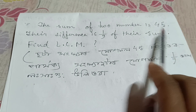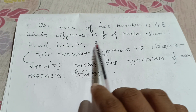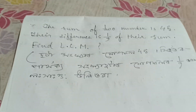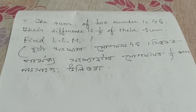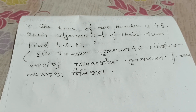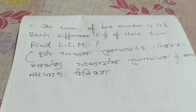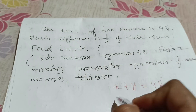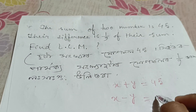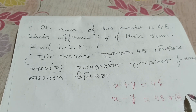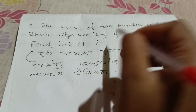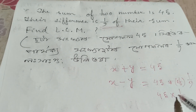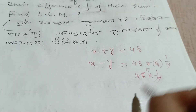The sum of two numbers is 45. The difference is 1 by 9 of their sum. The sum of two numbers is 45, so 1 by 9 of 45 equals 5.